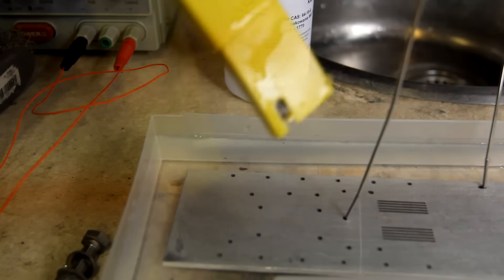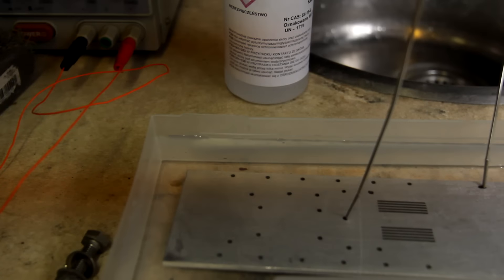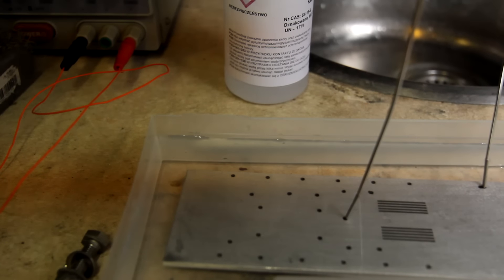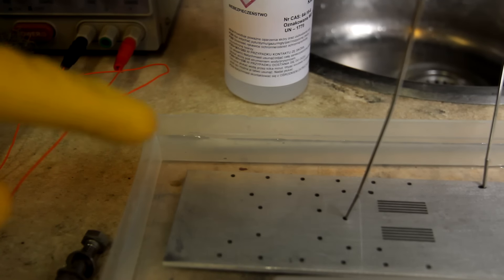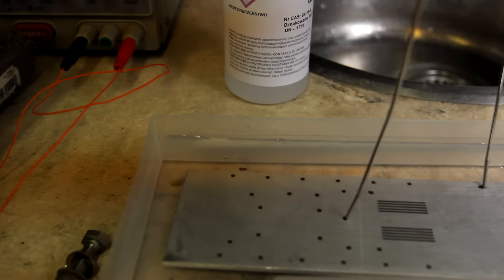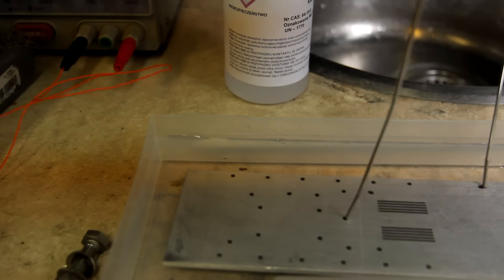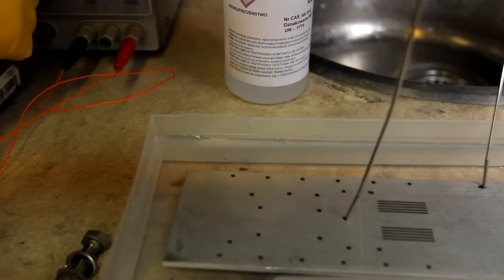Alright, so the manual called for anodizing at 120 amps per square meter for 30 to 45 minutes, which is pretty much 3 amps for this piece, which is exactly the maximum current of this power supply at 3.5 amps. So we're going to do that. I'm just going to max it out.